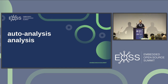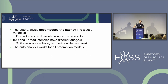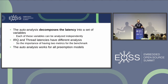The auto-analyze tries to decompose the latency into a set of variables — not one or two numbers, but a series of mostly independent values that compose the latency. Each of these values can be analyzed mostly independently. IRQ latency and thread latency are analyzed differently because IRQs follow different rules than threads. The auto-analyze works for all kernel configurations, including non-preemptive kernels. The concepts are abstracted to be as generic as possible.